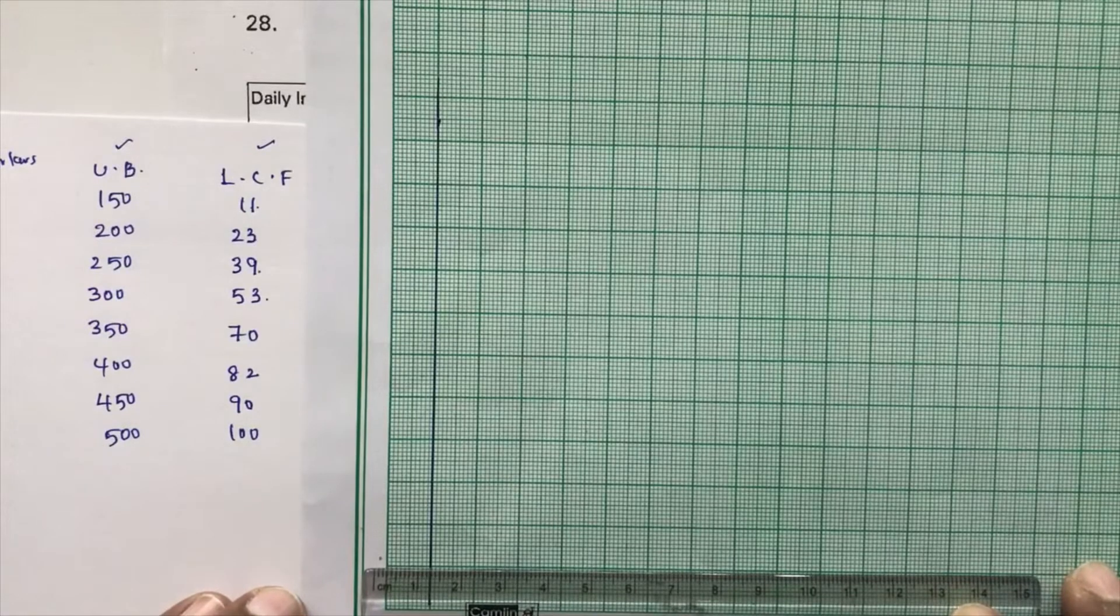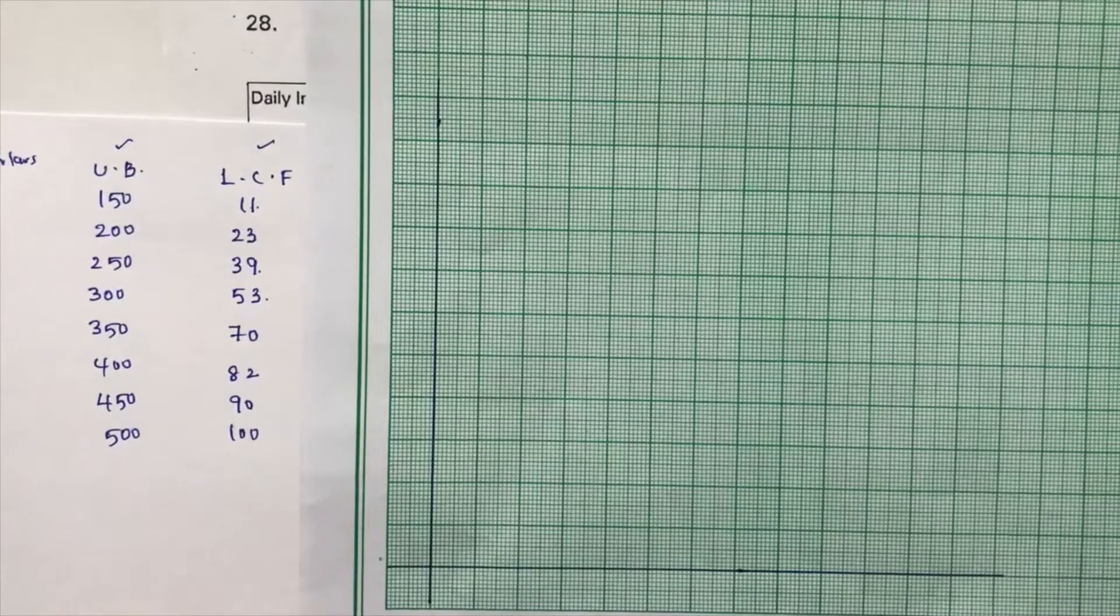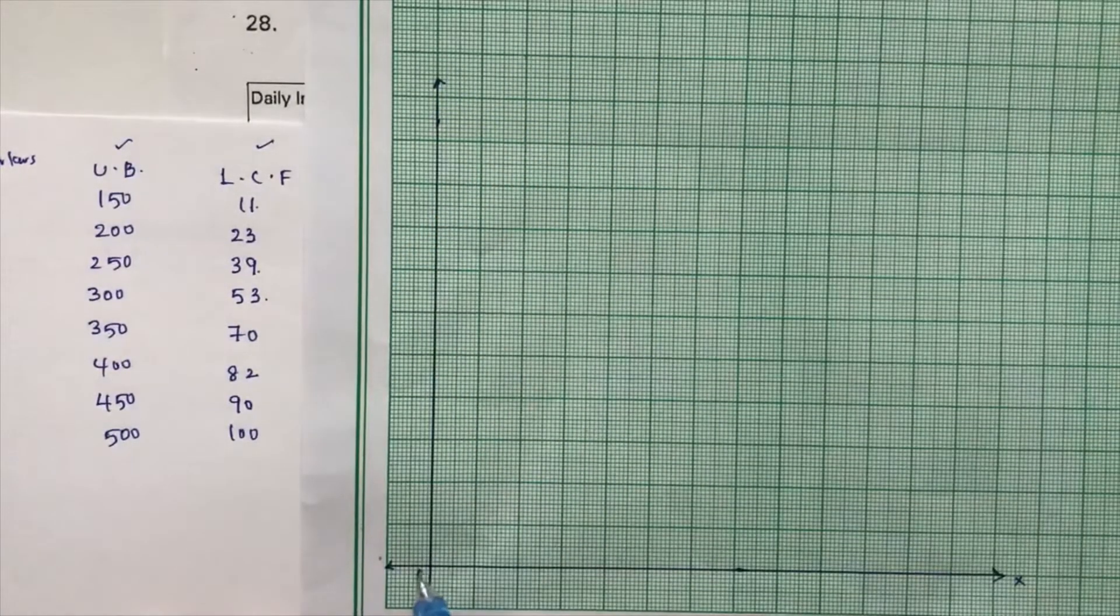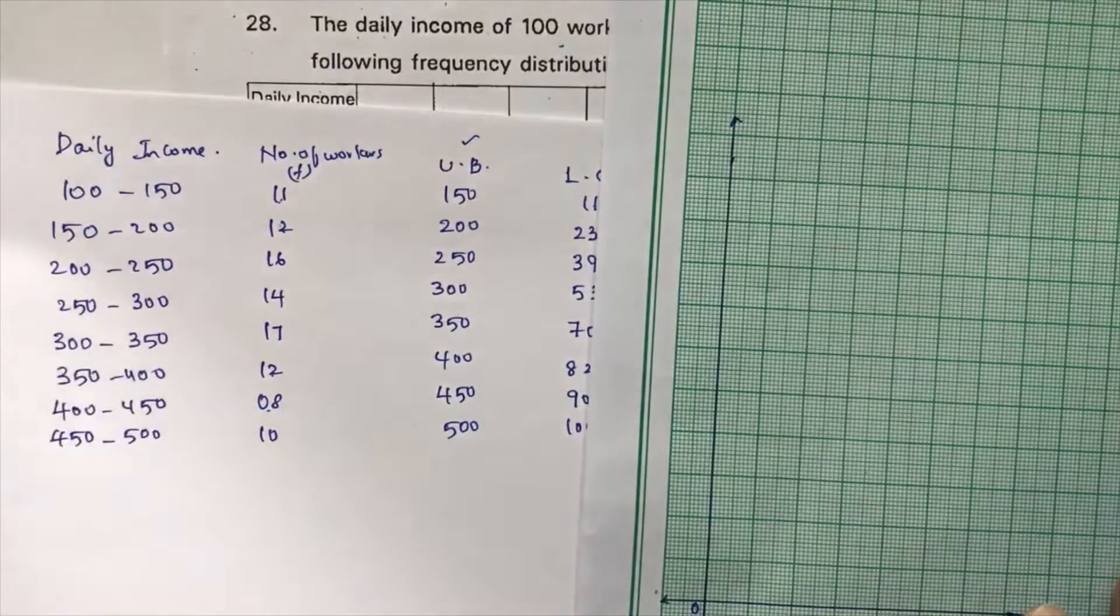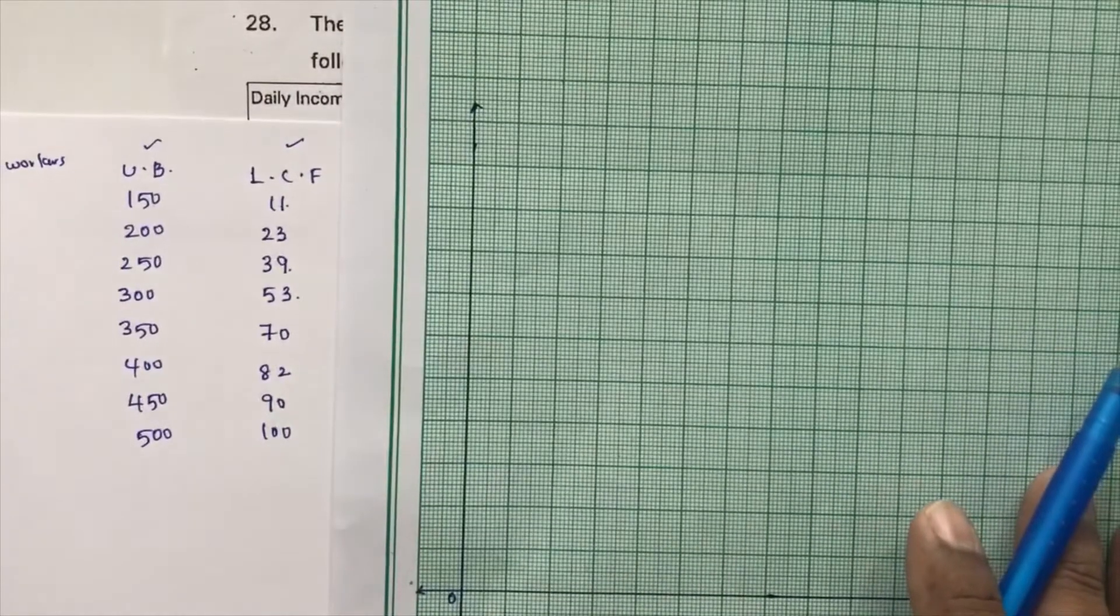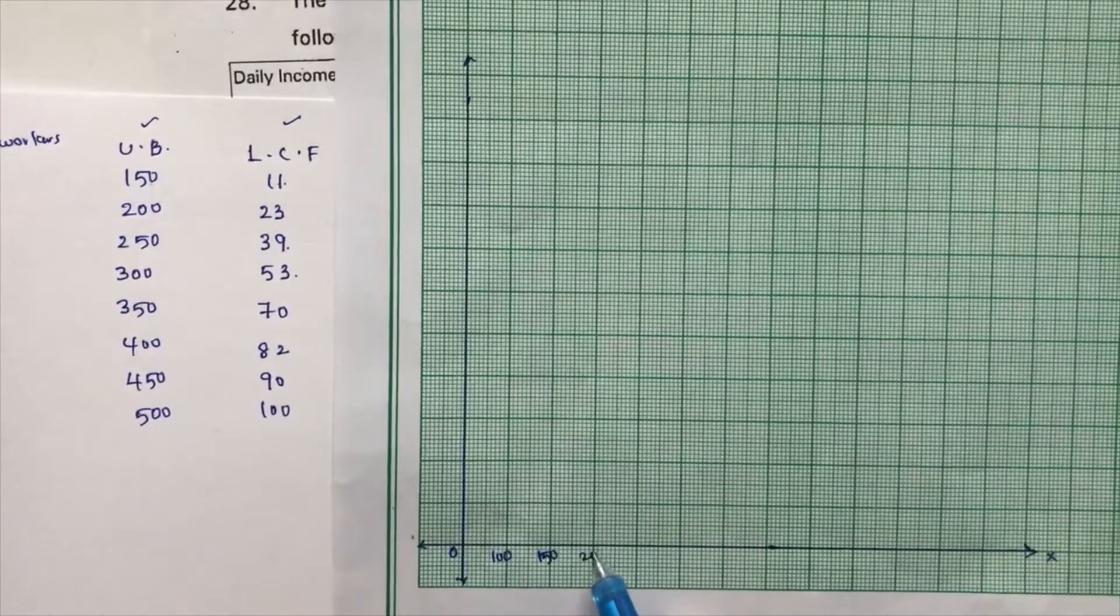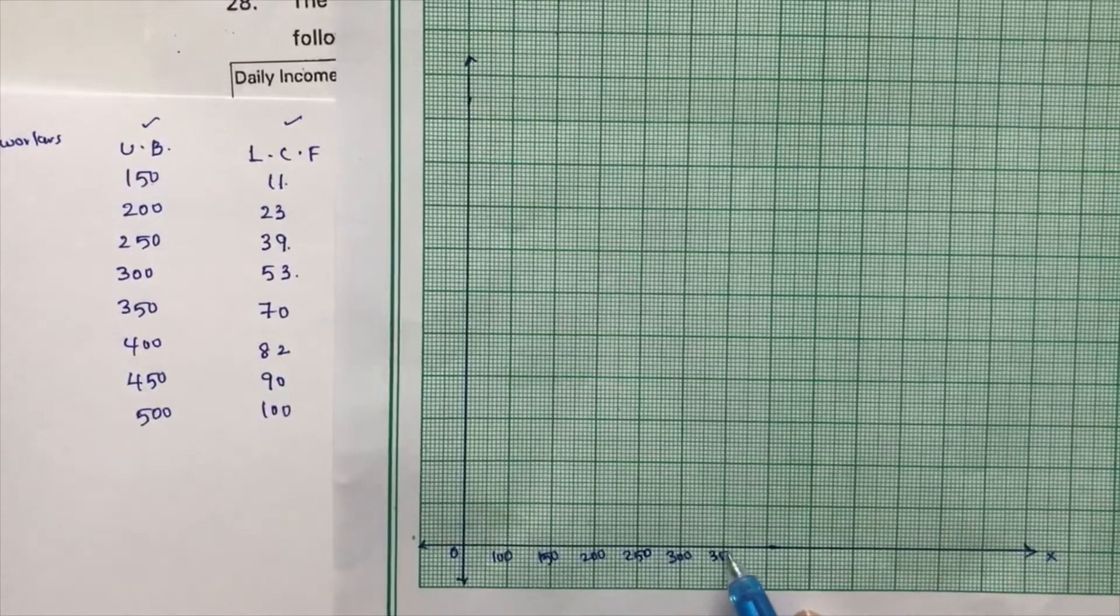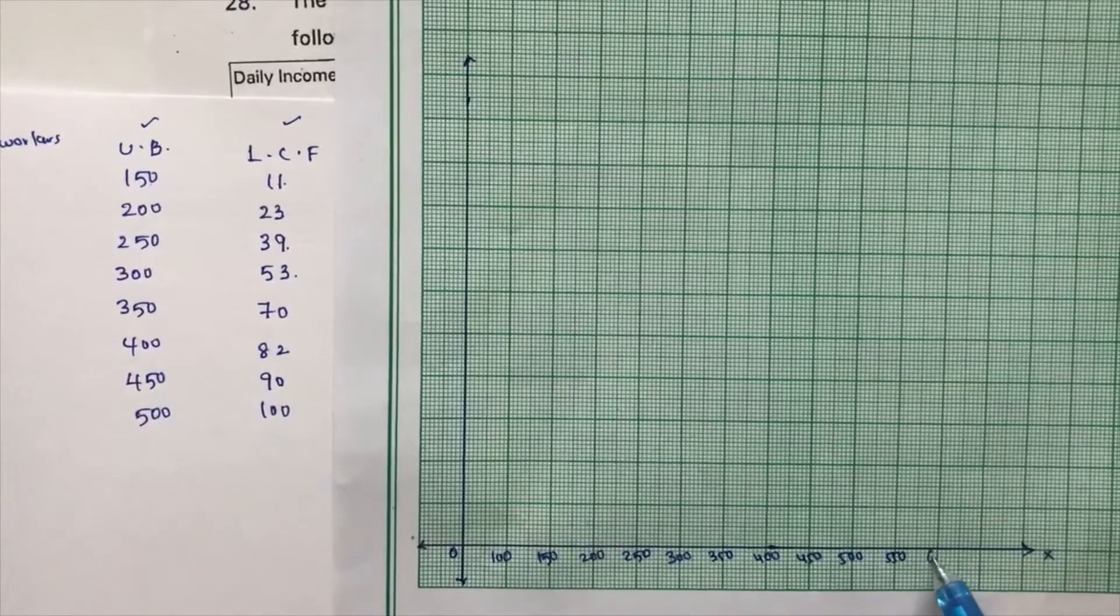Okay, now here, x-axis. Now see, 0. Now here, the first value starts from like 100, so you can start from 100. Or at least you can take 150 also, but okay, you can start from 100. So take these two values we need to plot. So take 100, then 150, 200, 250, 300, 350, 400, 450, 500, 550, 600.